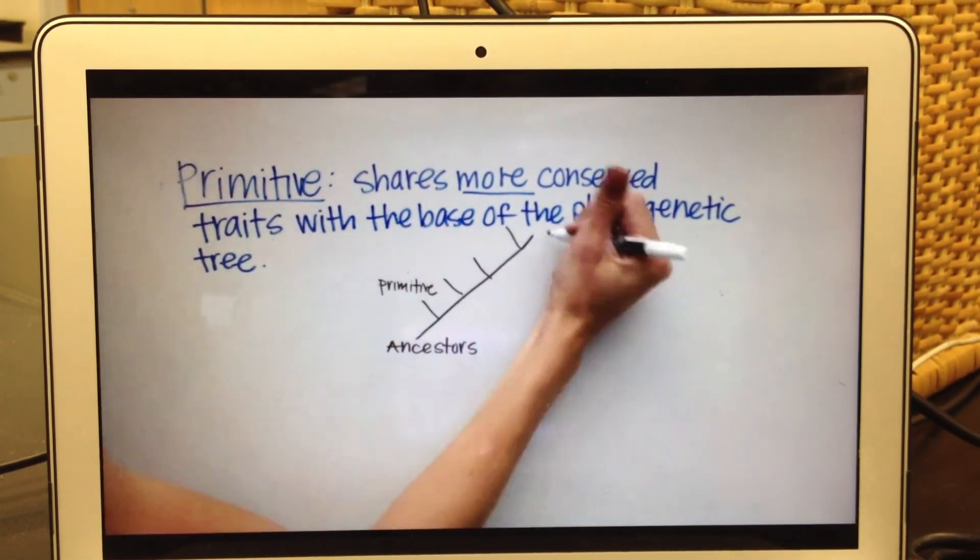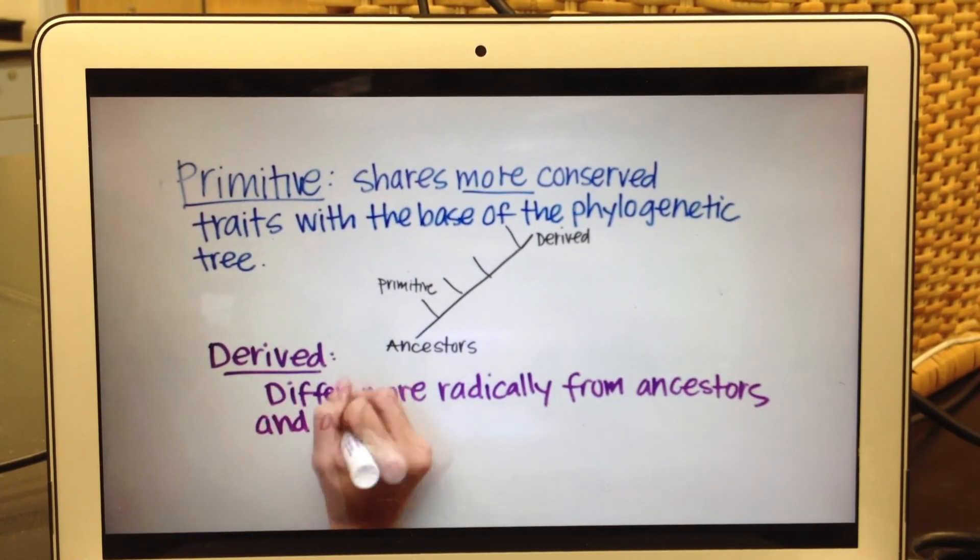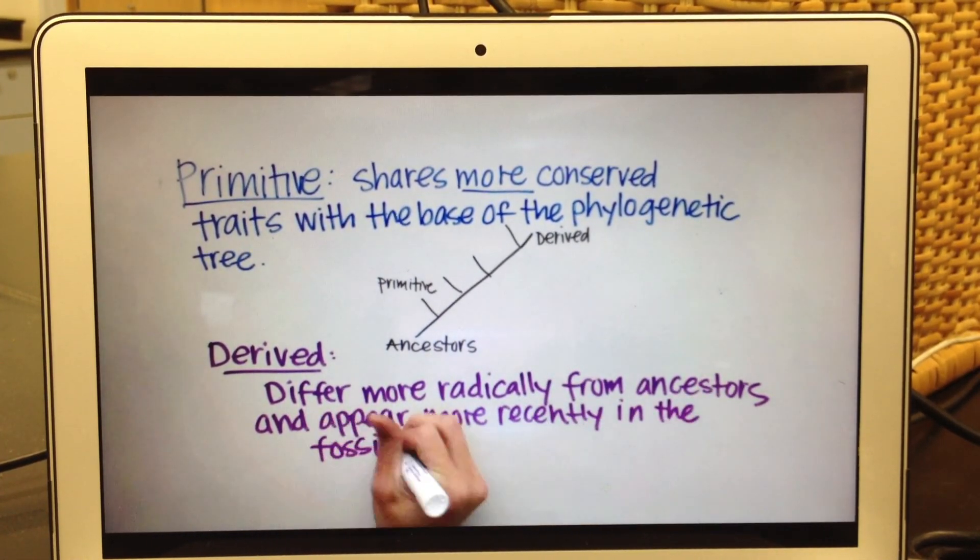On the other hand, a derived species is one who differs more radically from the ancestors. And it appears more recently in the fossil record.